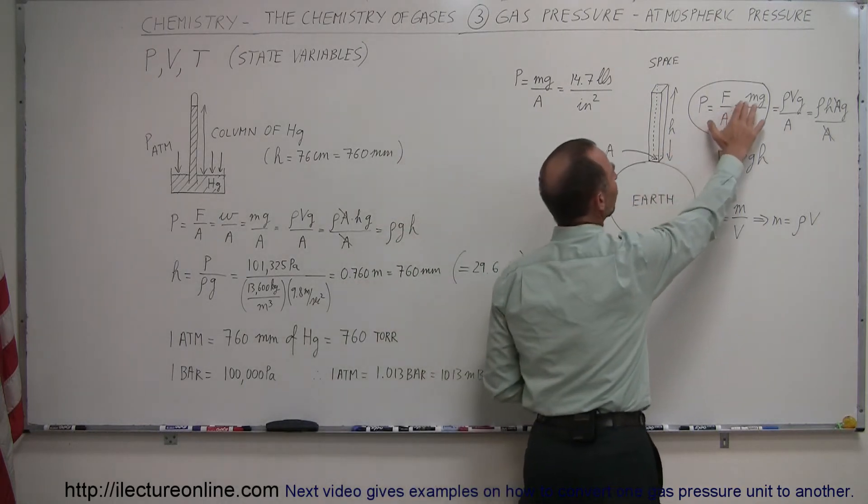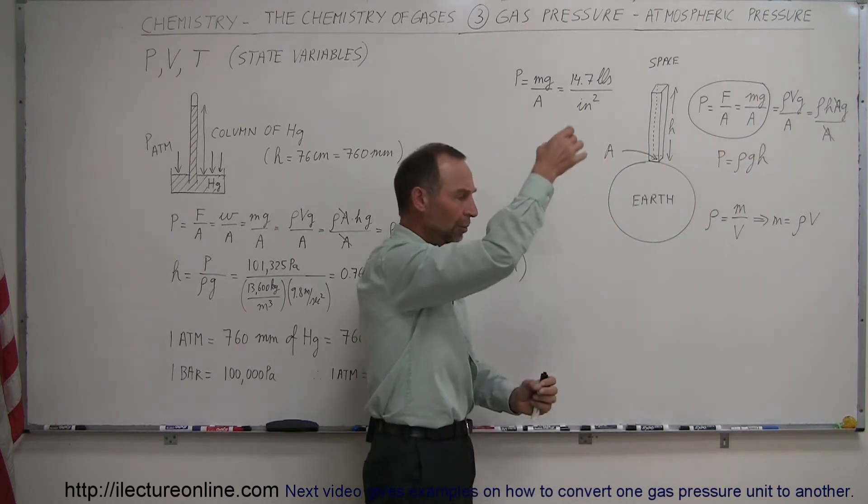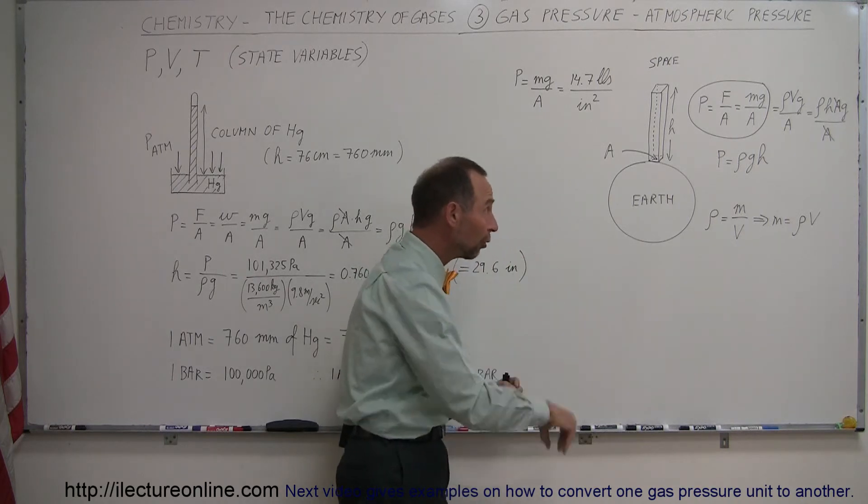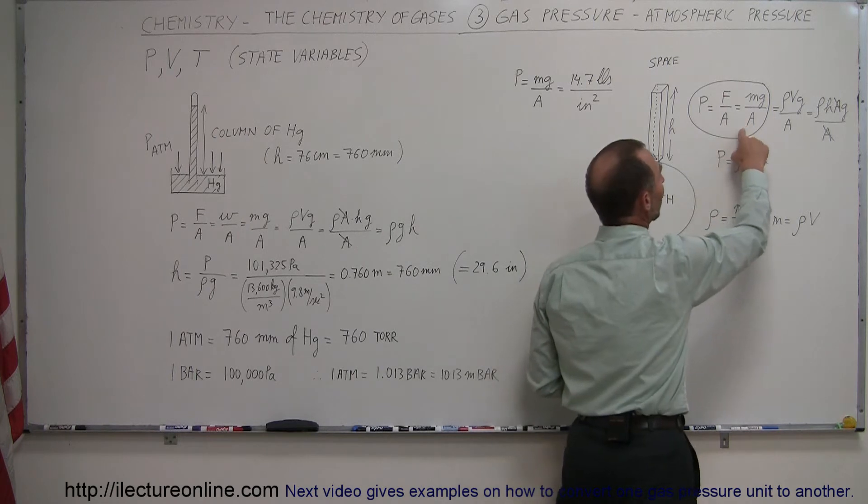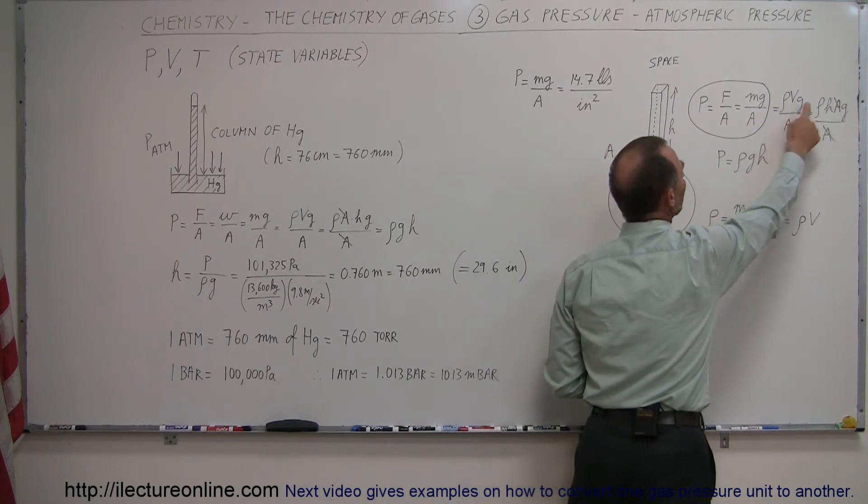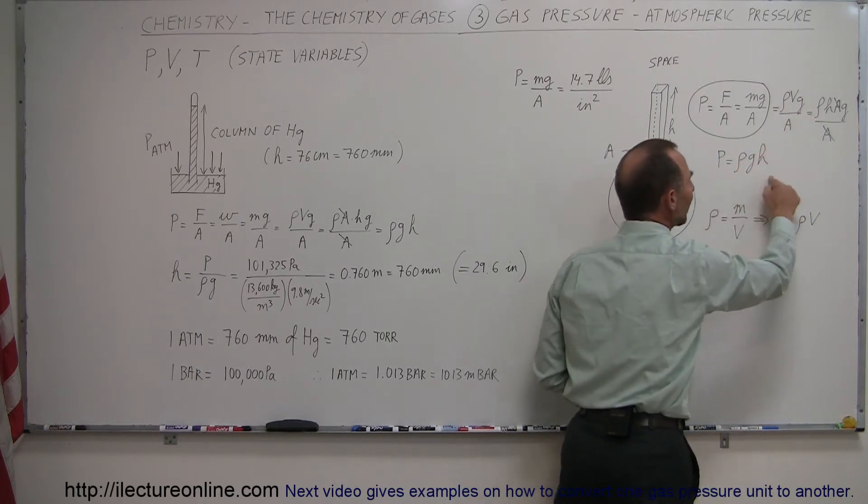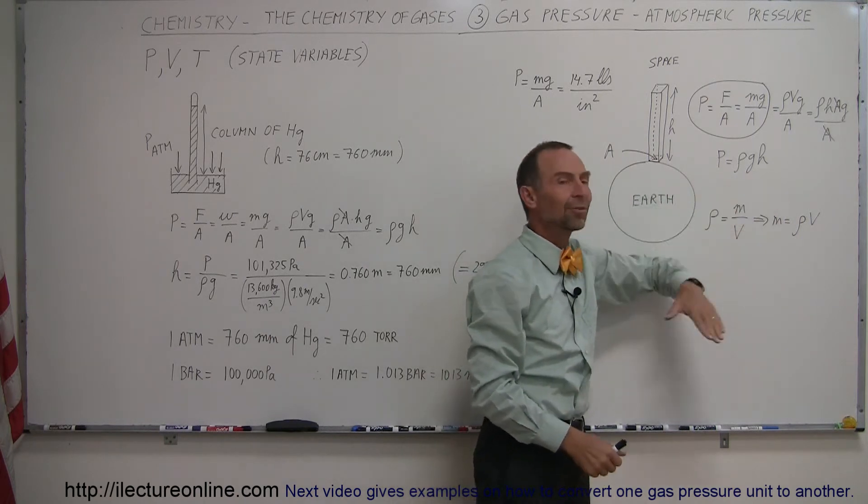And of course, that force is equal to the mg, which is the weight of the air column. So whatever that column of air weighs, that's the weight by which it pushes down on the ground and that's the force by which it pushes on the ground. And that weight, divided by the area, can also be written as the density of the air times the volume times the acceleration due to gravity. And essentially, the pressure can be defined inside a gas column as the density times g times the height of the column.